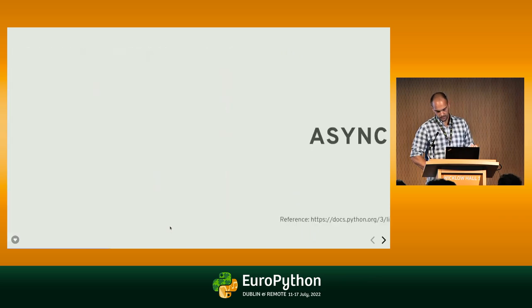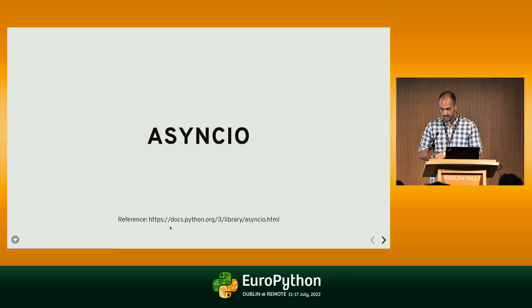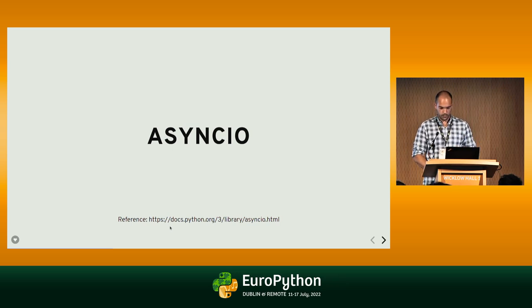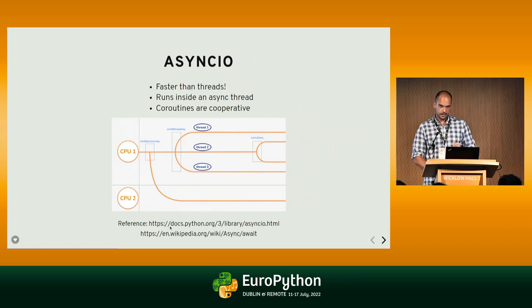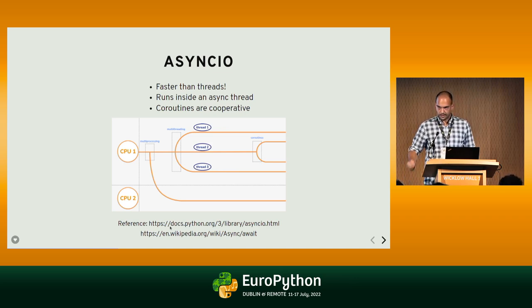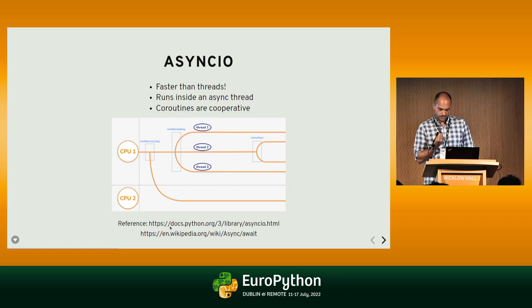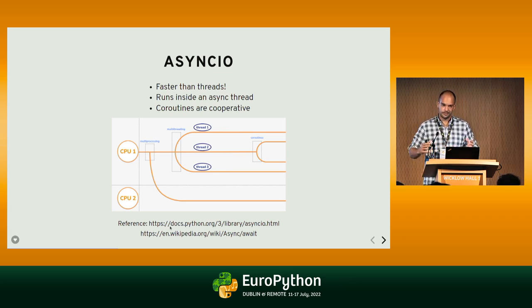We have processes and threads, but in Python 3 we also have the AsyncIO module and the async/await keywords. The key thing is you get exactly the same benefits as with threads, but coroutines are faster because of their implementation. They run inside a thread — we call that an async thread — and the other key thing is that coroutines are cooperative.